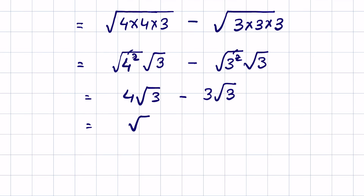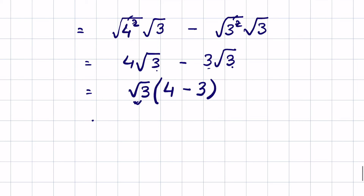Now let's take square root of 3 as common. 4 times square root of 3 divided by square root of 3 is 4, minus 3 times square root of 3 divided by square root of 3 is 3. So 4 minus 3 is 1, and square root of 3 times 1 equals square root of 3. This is the answer.